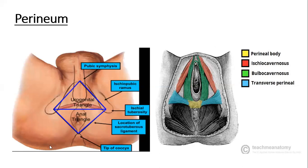Now let's take a look at the details of each subdivision of the perineal compartment, starting with the anal triangle. The anal triangle is the posterior subdivision of the perineal compartment. It is bounded by the coccyx and sacrotuberous ligaments. Anteriorly, we have drawn two imaginary lines between the ischial tuberosities.